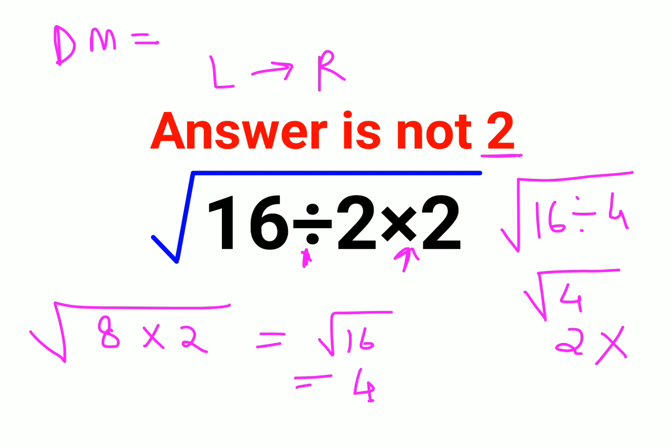For the answer to be 2, that can only happen if it had been written in this form: 16 divided by (2 times 2). This had to be in brackets. Only then could that step have taken place. But for this question, the answer will always be 4.